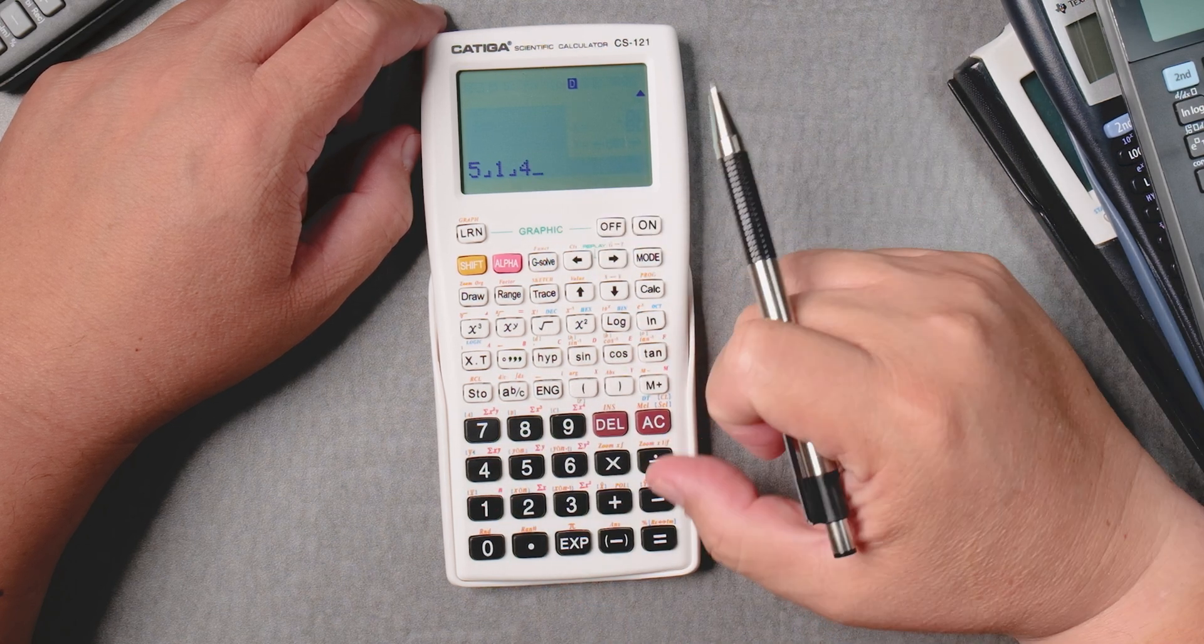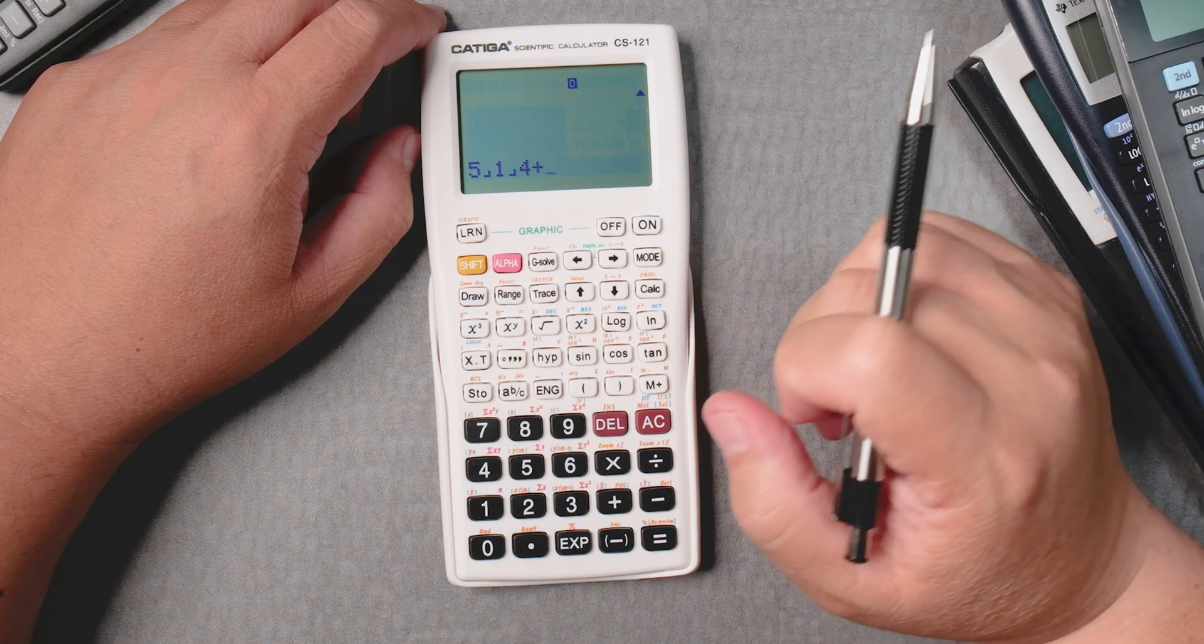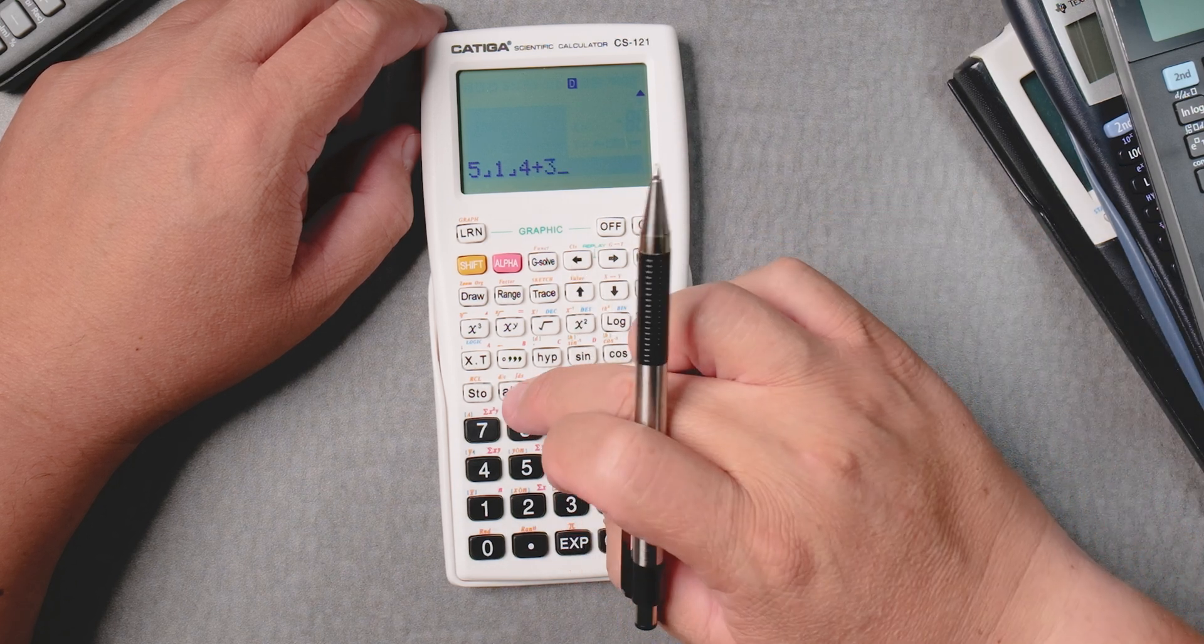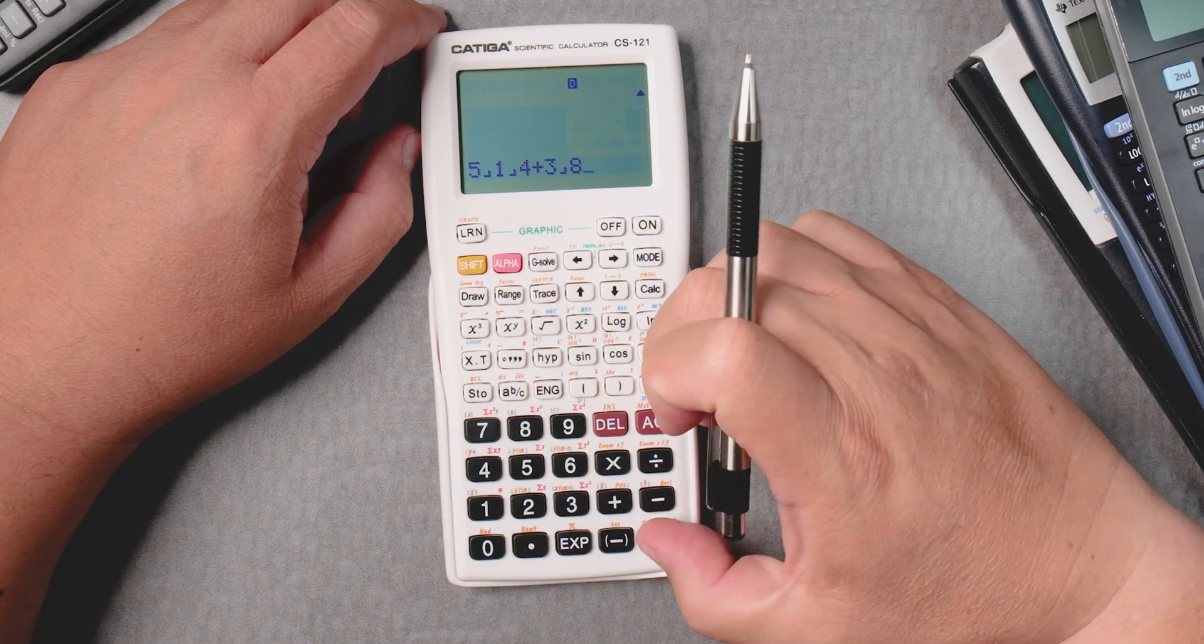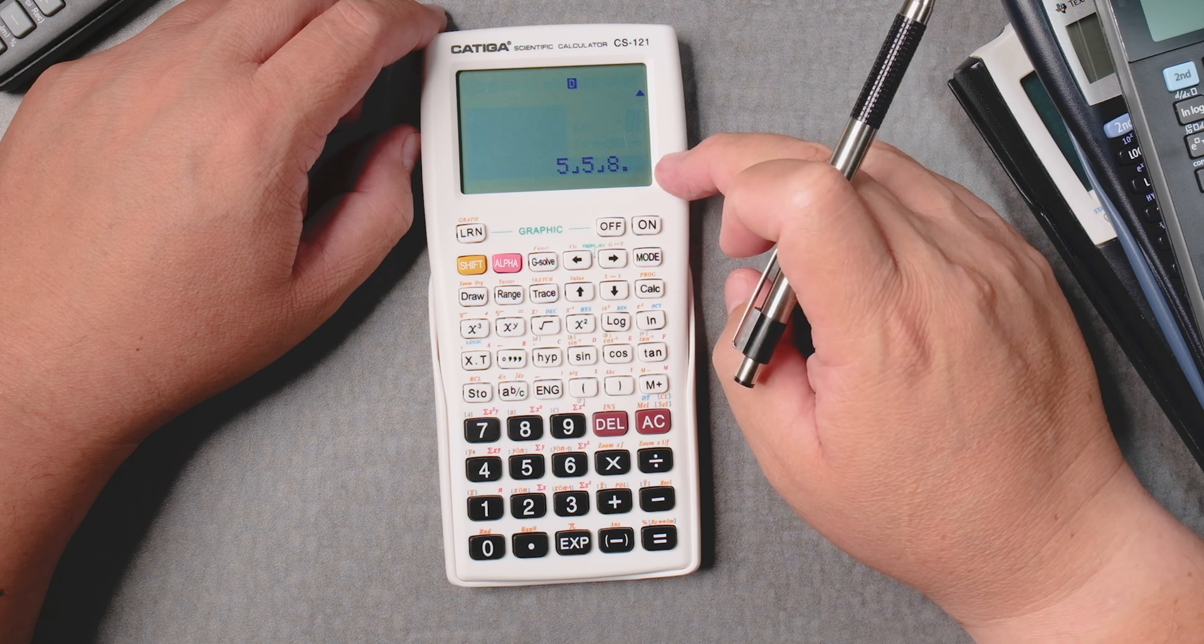Plus 3/8. 3, ABC, 8. Equals 5 and 5/8. Not bad.